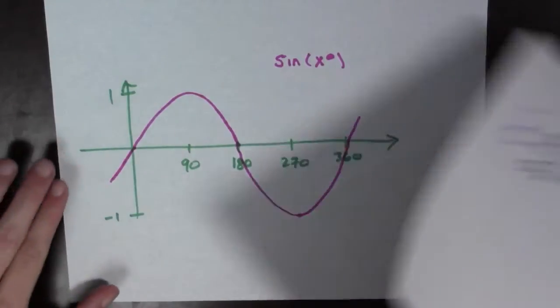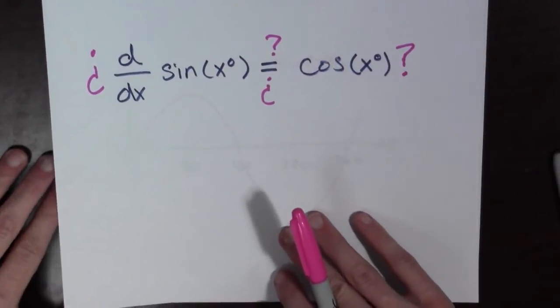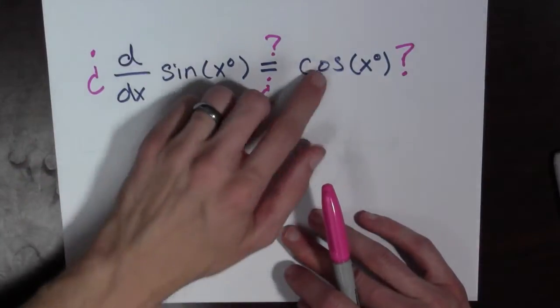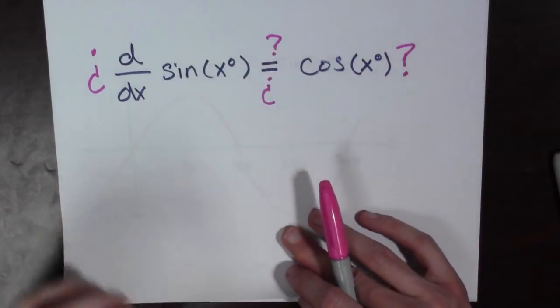And so there's a question that we can ask. We can ask, does the derivative with respect to x of sine of x degrees equal cosine of x degrees? Is that true?